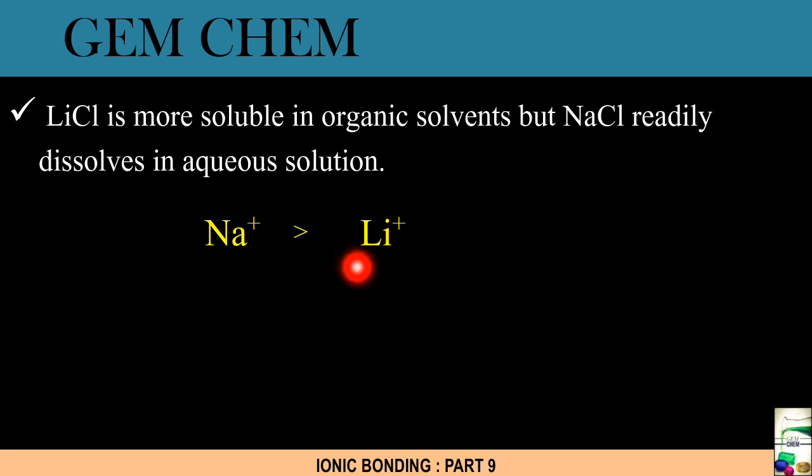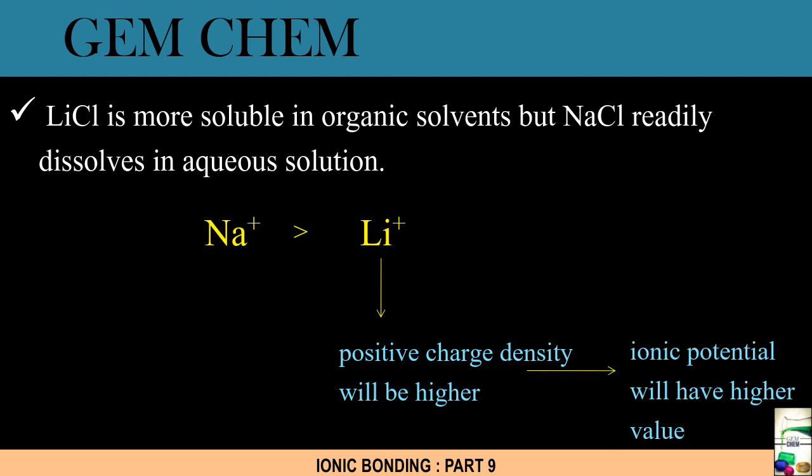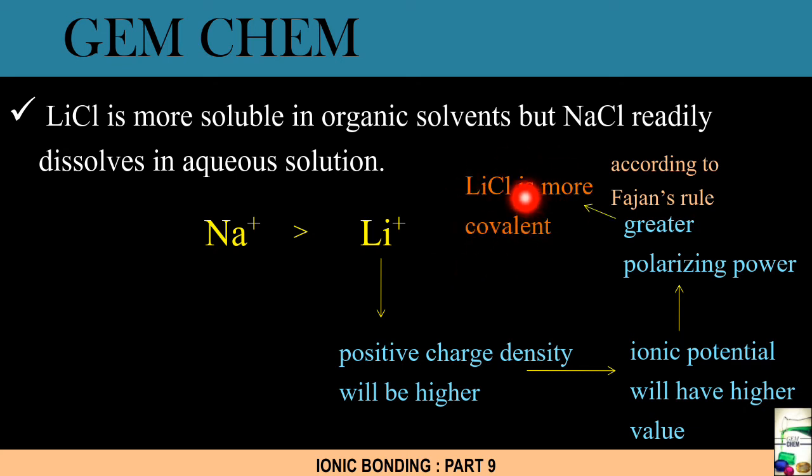Since it is smaller in size, the positive charge present around it which is +1 will be more and it will be closer to it. Then what happens is that since the positive charge density will be higher, as a result of this there will be more value of ionic potential which we have obtained previously - that is charge by the size. From here we can write that since there is a high ionic potential, there is greater polarizing power. So for LiCl according to Fajan's rule, it must be that LiCl is more covalent. Since covalent compounds are more soluble in organic solvent, LiCl is more soluble in organic solvents, unlike NaCl which is more ionic in nature due to the larger size of Na⁺ compared to Li⁺, so it dissolves in aqueous solution.